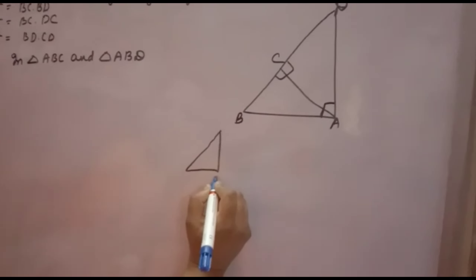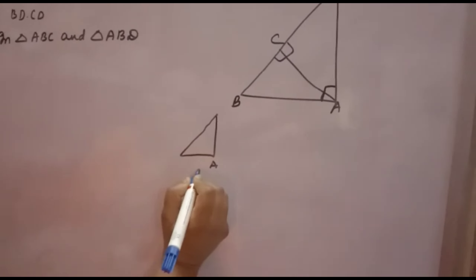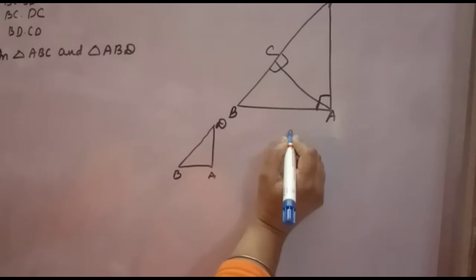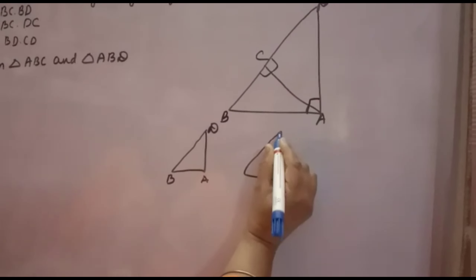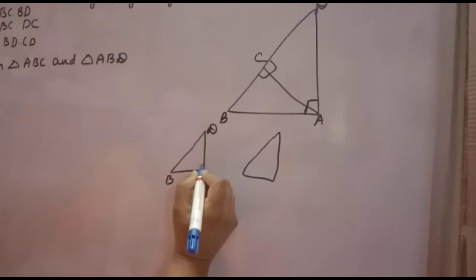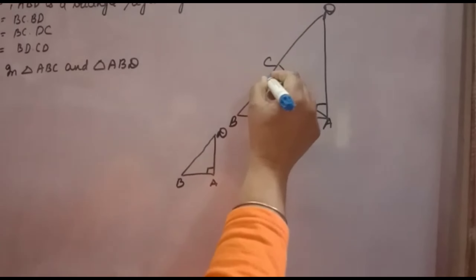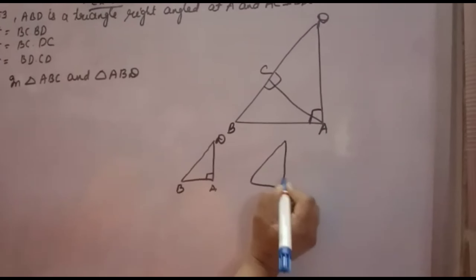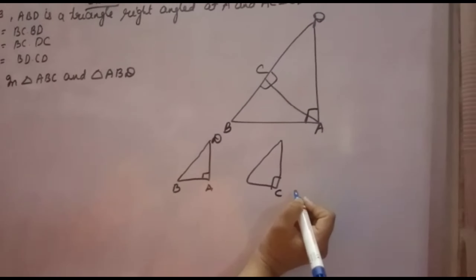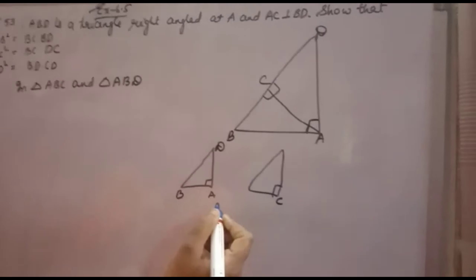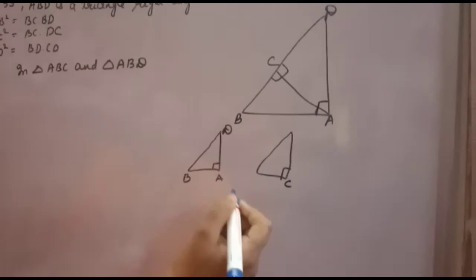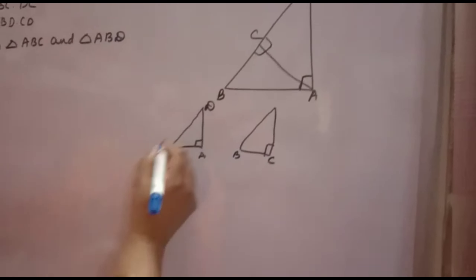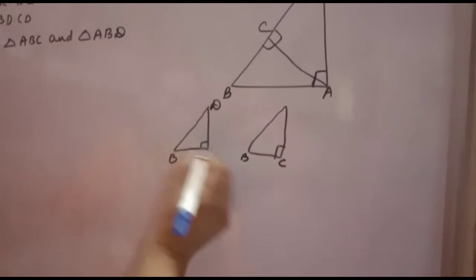Draw one triangle ABD; draw another one — because A is 90° in ABD and in ABC, C is 90°. So here you will take C. You have to take corresponding angles equal. Now you see in ABC, angle B is common, and in ABD, B is also there, so B is common.